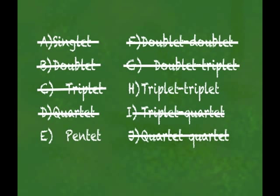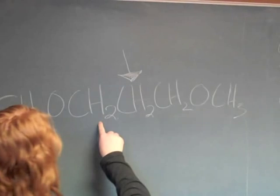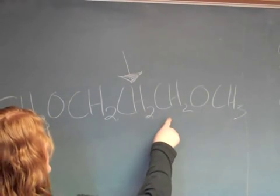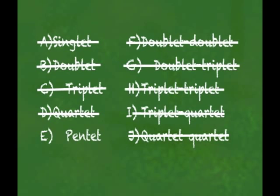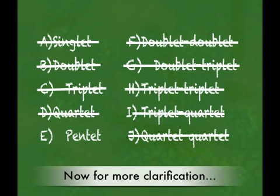Now we only have a pentet and a triplet-triplet left. It may be easy to assume it's a triplet-triplet because we see two sets of neighboring hydrogens. However, in this particular molecule, there is a planar symmetry right at our hydrogen in question. The two sets are equivalent, thus we count them as one N.